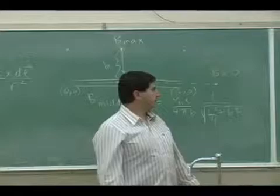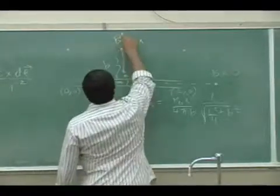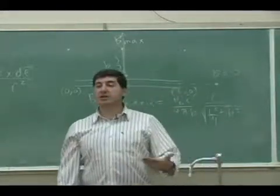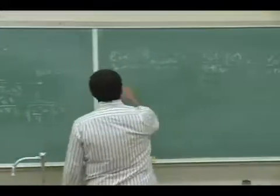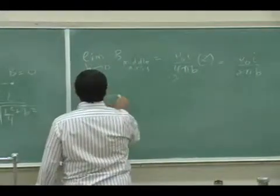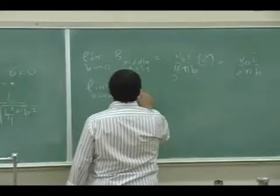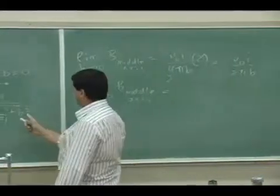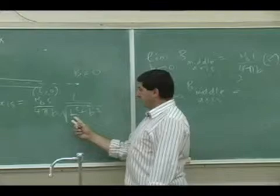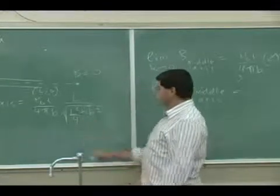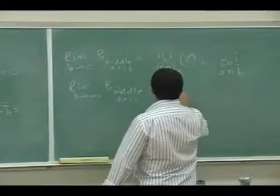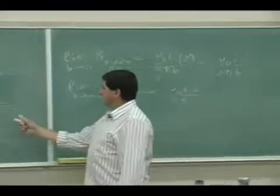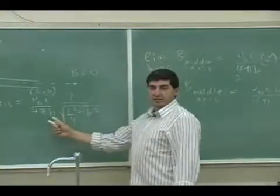And then the other limit I can do is the limit as B goes to infinity to find the magnetic field behavior as I go away from the wire. That time this is big compared to that so you're only left with B, so you're left with μ₀IL over 4π times B, and then B times B is B squared.